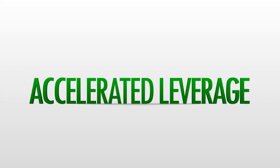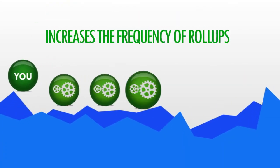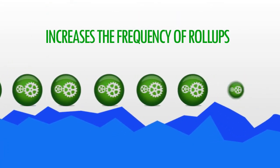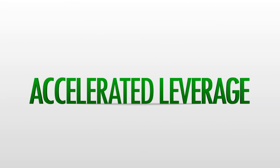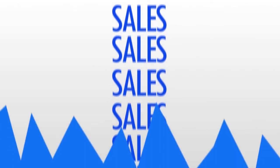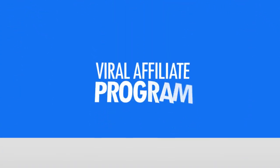Accelerated leverage takes full advantage of this by increasing the frequency in which roll-ups are happening. To put this simply, with accelerated leverage, you've got more sales rolling up more often, creating a true viral affiliate program.